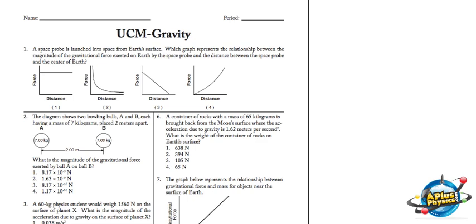Alright, problem 1. A space probe is launched into space from Earth's surface. Which graph represents the relationship between the magnitude of the gravitational force exerted on Earth by the space probe and the distance between the space probe and the center of Earth? Well, to do that, I have to remember that the relationship between the gravitational force and distance is GM1M2 over R-squared. And the key here, our variable on our x-axis, is the distance between their centers, R-squared. And since that's squared in the denominator, this is an inverse square law. Correct answer, 2.